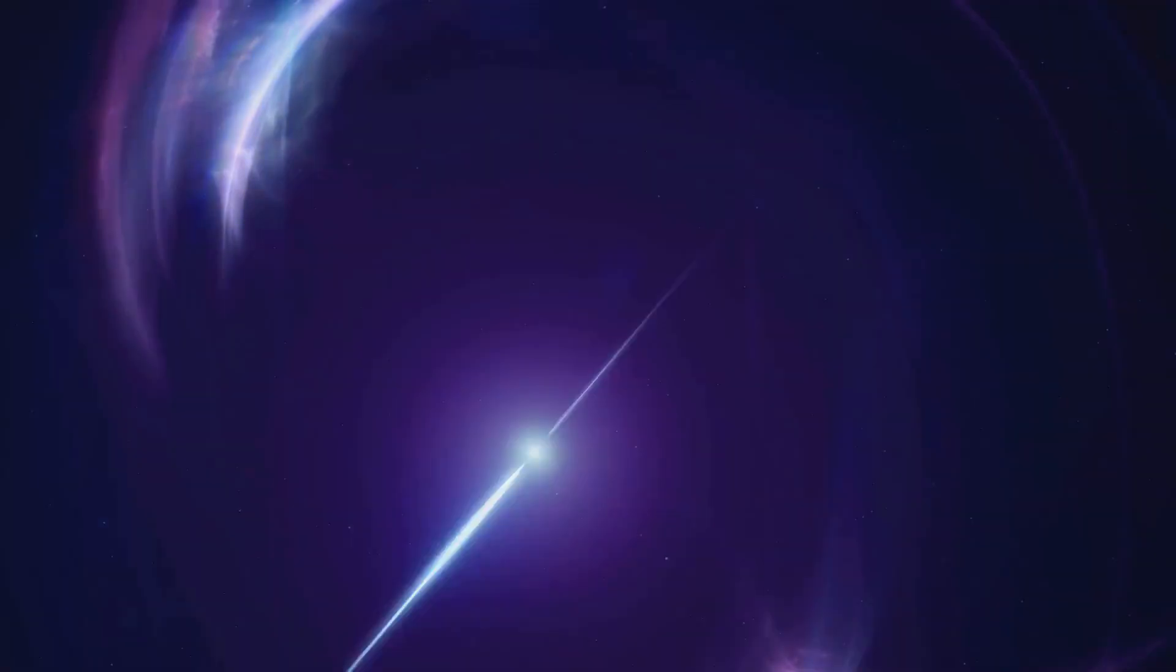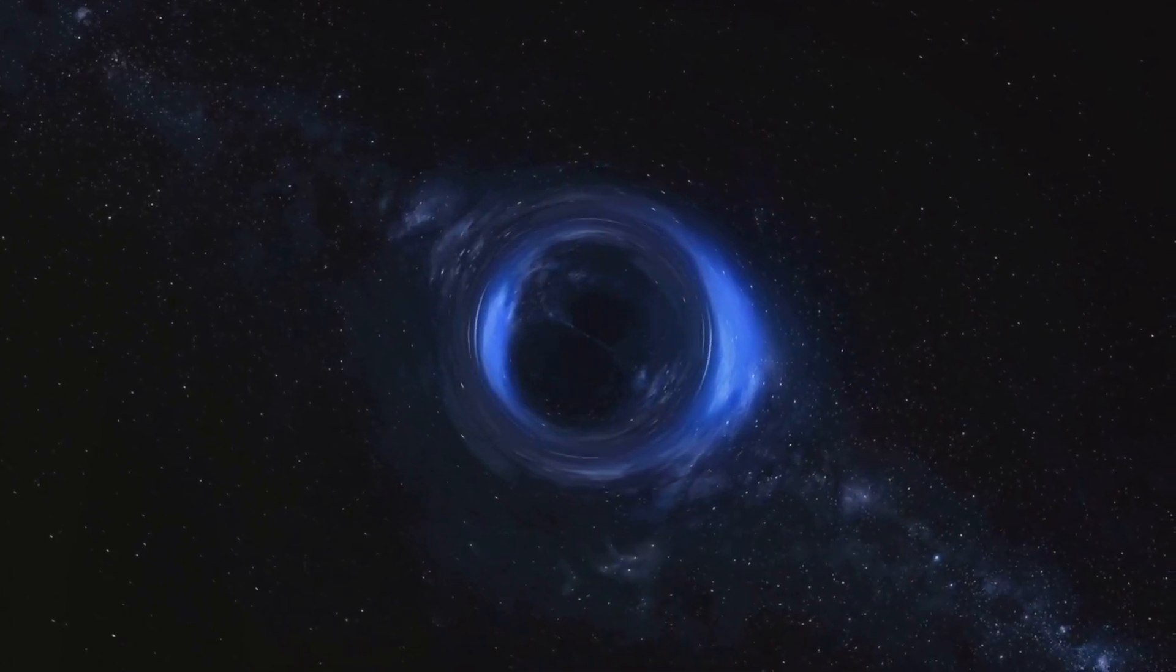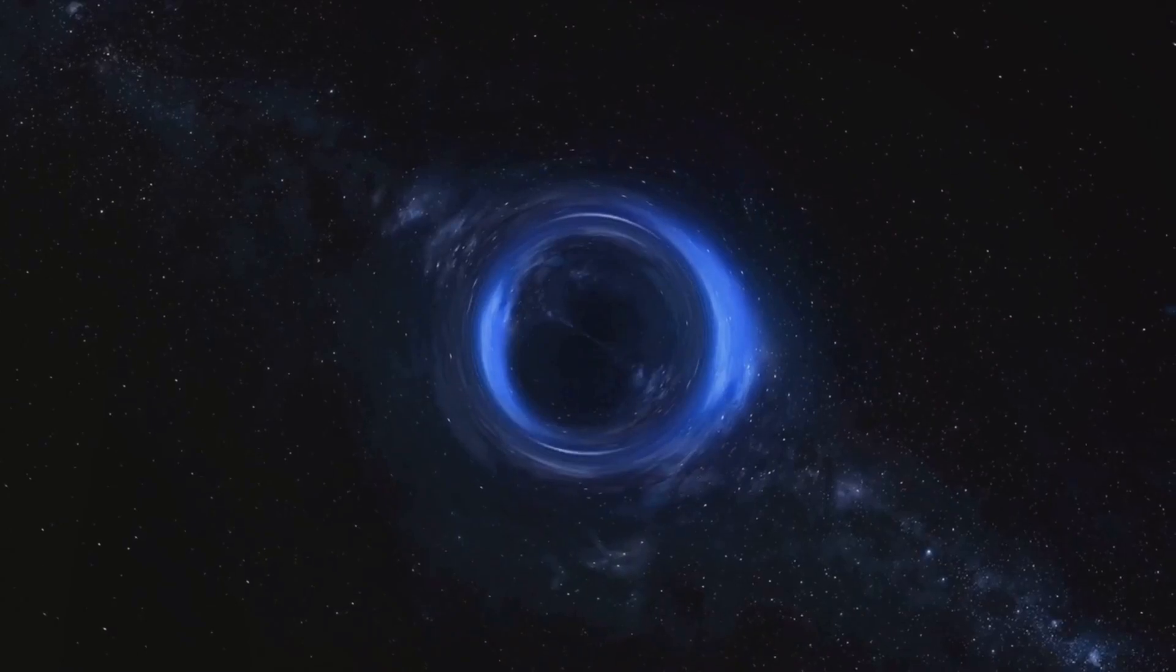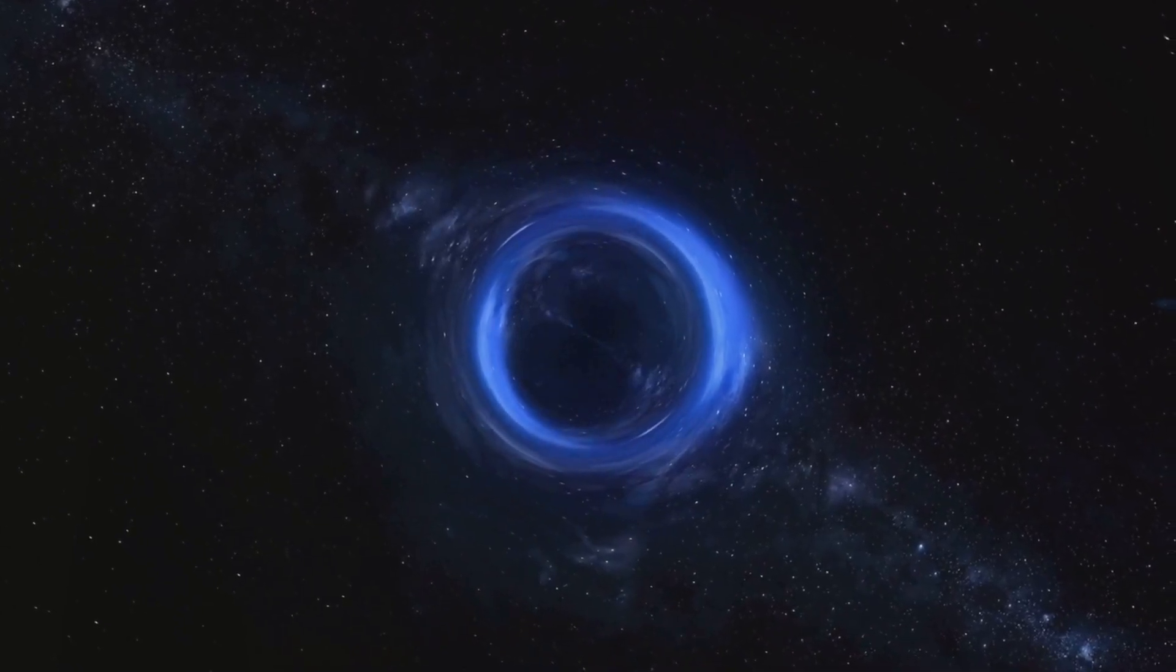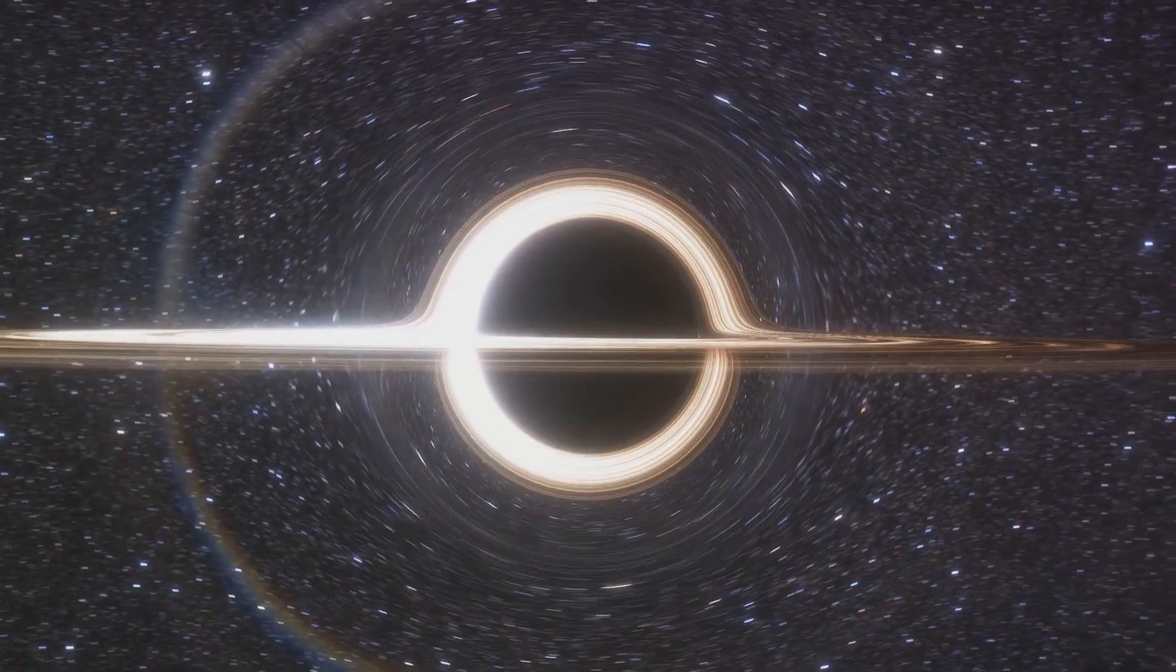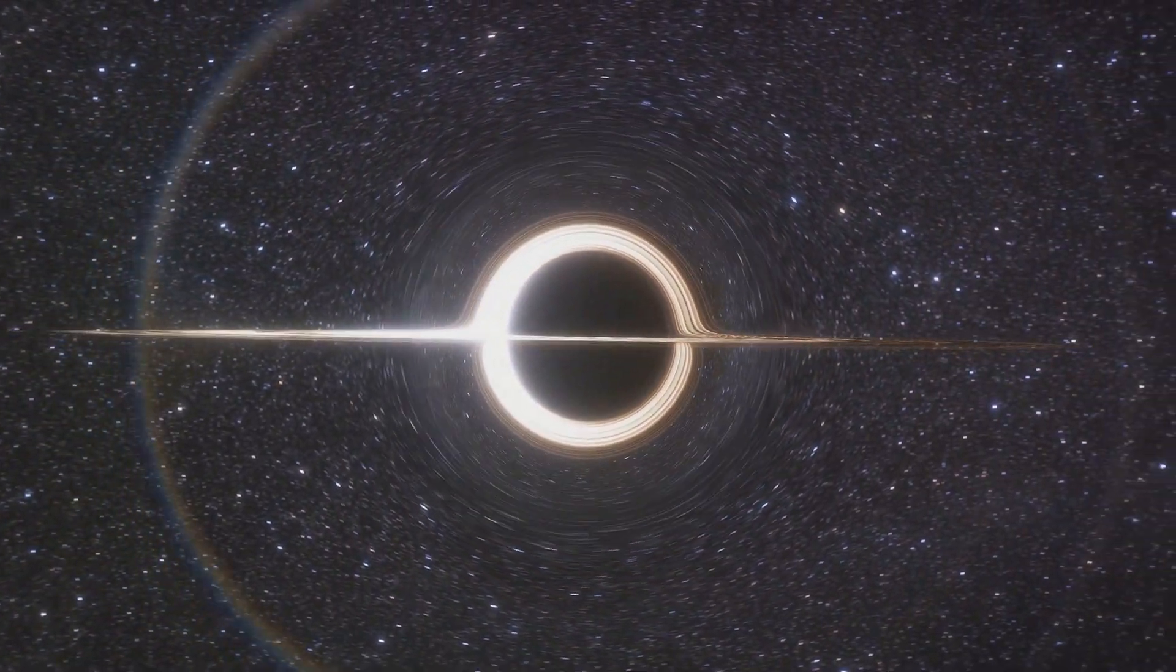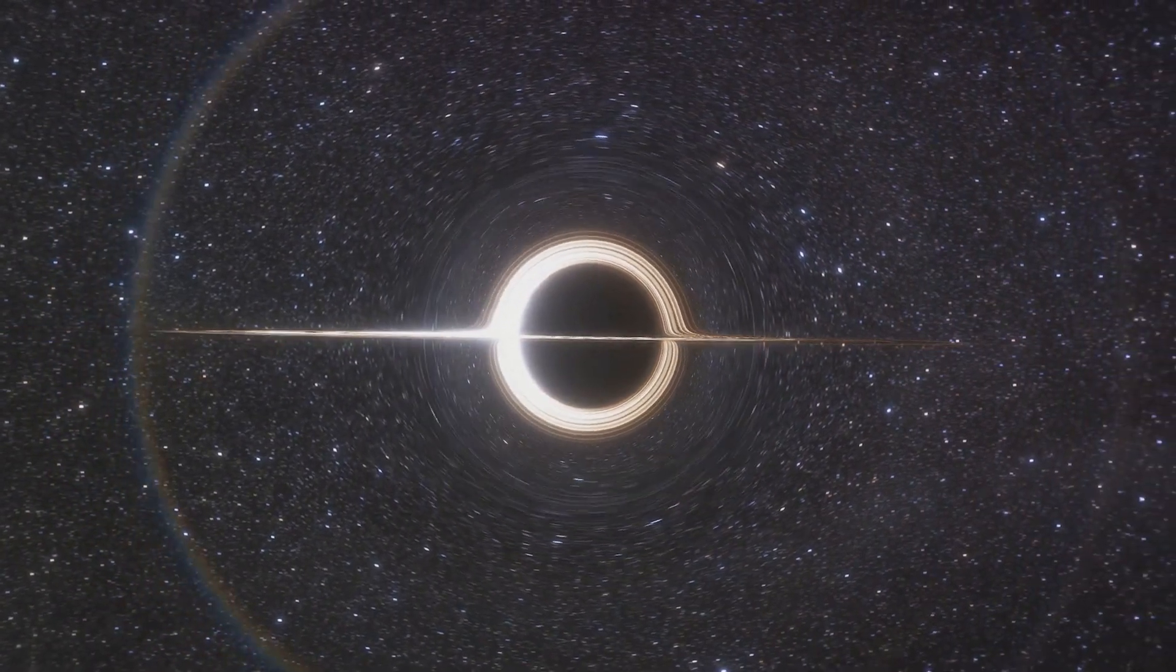Named after physicist Stephen Hawking, this theoretical prediction suggests that black holes are not entirely black, but emit small amounts of thermal radiation. This is due to quantum effects near the event horizon, the boundary beyond which nothing can escape the black hole's gravitational pull. Hawking radiation implies that black holes can lose energy, and over unimaginably long timescales, they could even evaporate entirely.